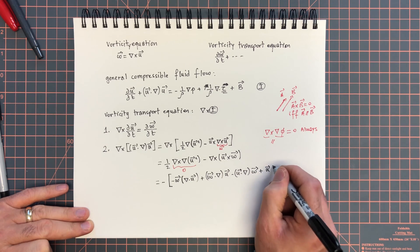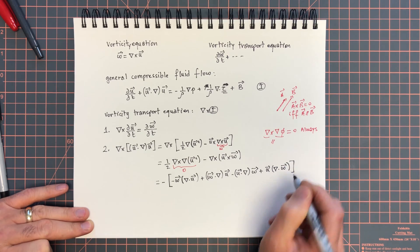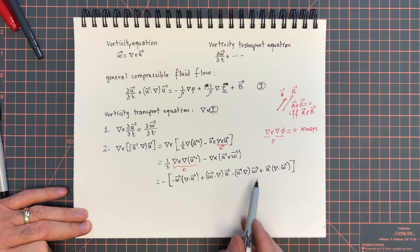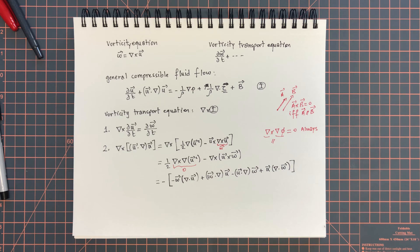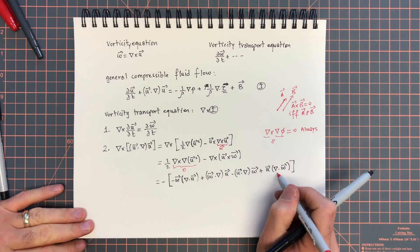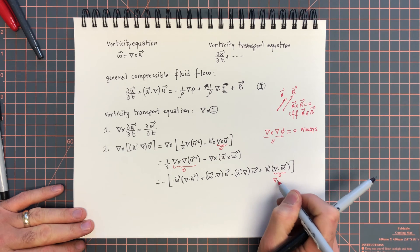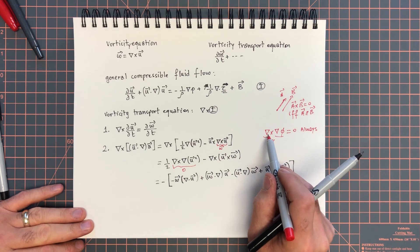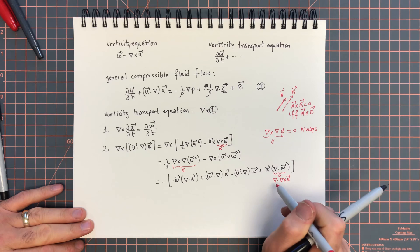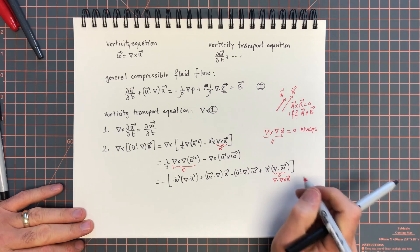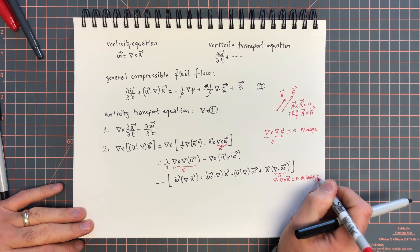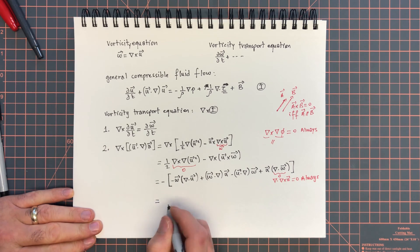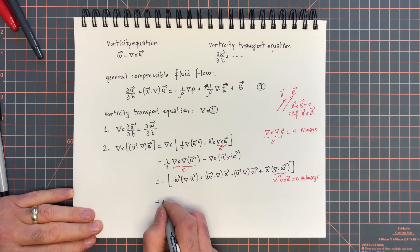So the curl of u cross omega equals minus omega div u, this should give us a vector, plus omega dot grad u minus u dot grad omega plus u div omega. See the symmetry between these terms, omega div u and u div omega, omega dot grad u and u dot grad omega, and see how the signs alternate.